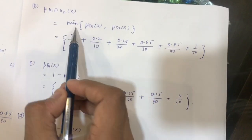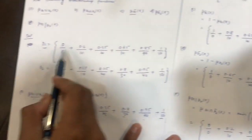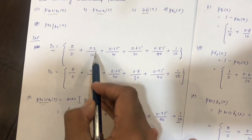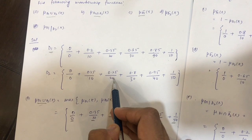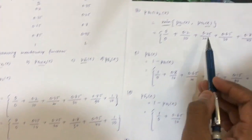For intersection, we take the minimum of D1 and D2. D1 ∩ D2 minimum is 0/0 + 0.2/10 + 0.25/20 + 0.65/30 + 0.85/40 + 1/50. This is the final answer.